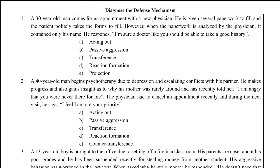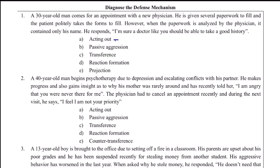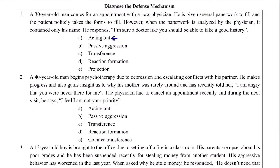Case study for defense mechanisms: a 30-year-old man is given paperwork to fill at a new physician's office. He politely takes the forms but returns them with only his name filled in, responding 'I'm sure a doctor like you should be able to take a good history.' This is a typical case of passive aggression — he is expressing hostility in a non-confrontational manner. If he were acting out, he would more likely throw the papers at the doctor.